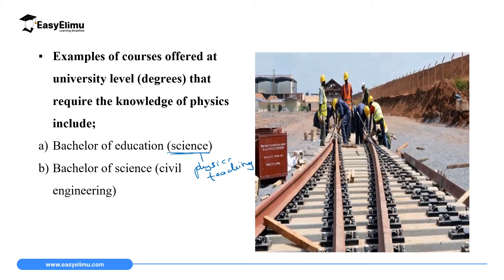Another degree course one can undertake at university is Bachelor of Science in Civil Engineering. Civil engineers are people who construct roads, design houses, and construct bridges. As you can see in the photo on the screen, these are civil engineers who are constructing a railway line.